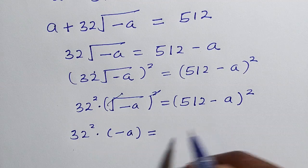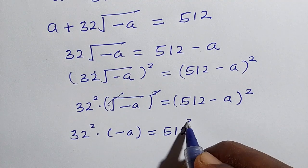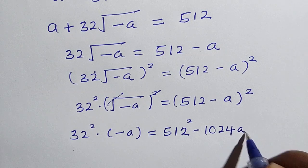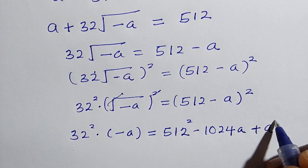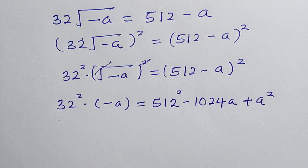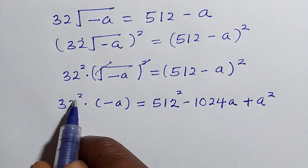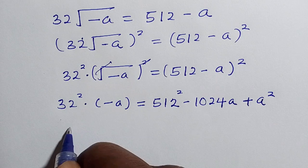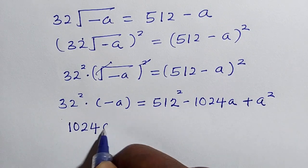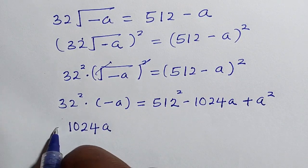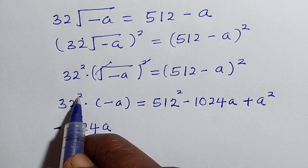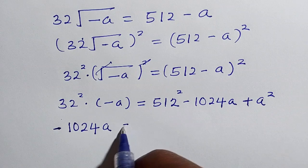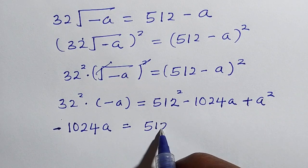When we expand this we have 512 squared minus 1024a plus a squared. And on the left side we have 32 squared multiplied by minus a, which becomes negative 1024a, because squaring here does not affect the negative sign, so this is just minus 1024a.